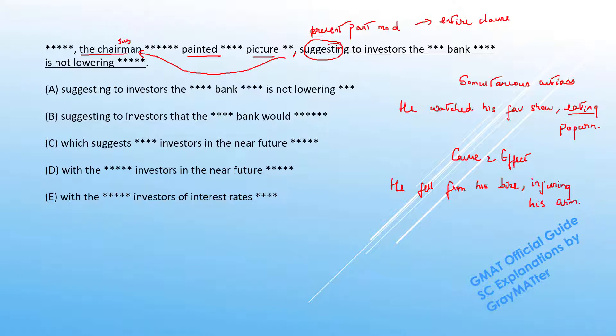Now in both cases grammatically we can see that these present participle modifiers modify the entire clauses in front of them and also apply to the subject whom this action is referring to. So "he watched his favorite show eating popcorn." Who was eating popcorn? He was. And who injured the arm in this case? He was.